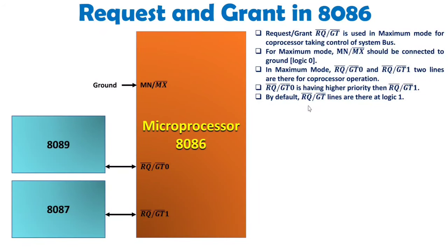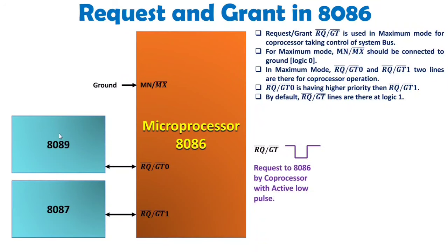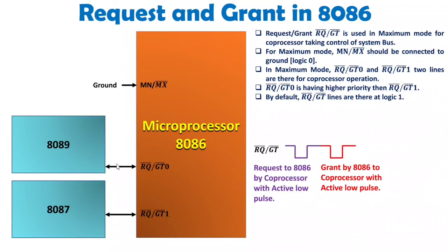I will now explain how those signals are given to 8086 with respect to time. First, the coprocessor gives a logic 0 pulse to request bus control from 8086 — that is the bus request signal sent by the coprocessor to 8086 via active low pulse. After some time, 8086 gives a pulse back to the coprocessor. This is bidirectional: first the coprocessor sends a signal to 8086, then 8086 sends a grant signal back to the coprocessor by active low pulse.